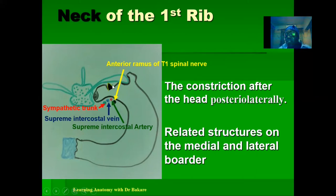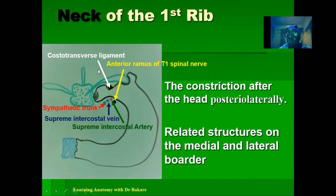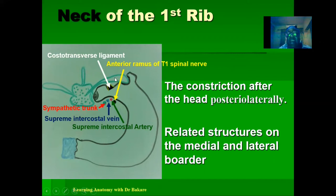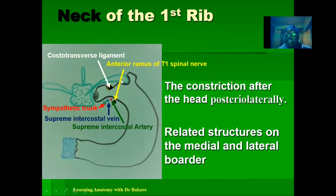On the lateral border of the neck, we see the costal transverse ligament. From the name, it is the ligament that connects the ribs with the transverse process of the first thoracic vertebra. The first thoracic vertebra has a body, a spinous process, and transverse processes. This ligament connects the transverse process of the first thoracic vertebra with the neck of the first rib, adding strength to the joints created around this region.